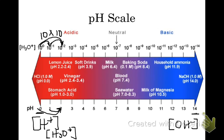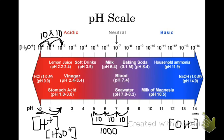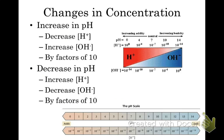Let's go from a pH of 8 all the way to 5. Going by factors of 10: 10 times 10 is 100, times another 10 is 1,000 — three steps, so a factor of 1,000. Going from pH 8 to 5 decreases the H⁺ concentration by a factor of 1,000 and increases the OH⁻ concentration by a factor of 1,000. So when we increase the pH, we decrease H⁺ and increase OH⁻. When we decrease the pH, we increase H⁺ and decrease OH⁻ — all by factors of 10.